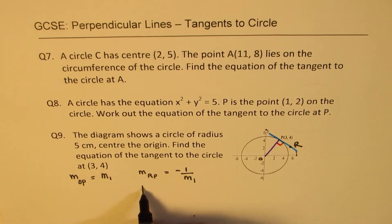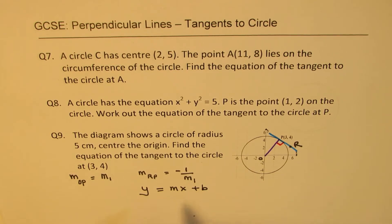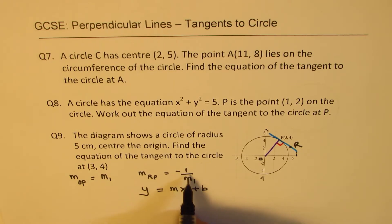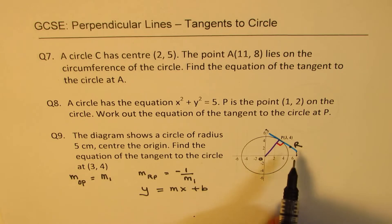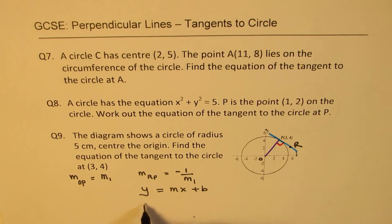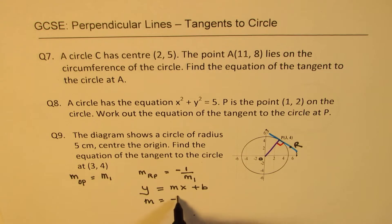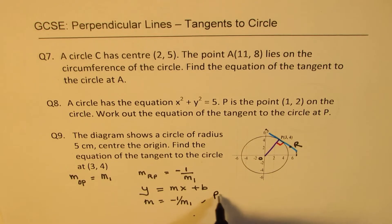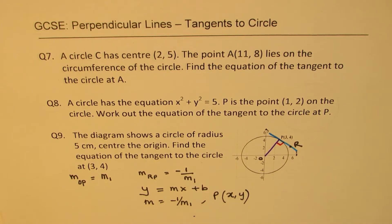In general, if O is the center and P is the point, the slope of OP is m1. Since the tangent is perpendicular to the radius, the slope of the tangent line is the negative reciprocal of m1. Once you know the slope, use the equation y = mx + b, substituting the known slope and the point P to solve for b and find the full equation.